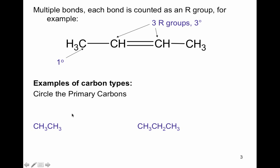Here are some examples of different carbon types. In this exercise, I want you to circle the primary carbons. There might be other carbon types in the molecule, but for this part circle the primary ones. This carbon right here is primary, and this one is also primary. This particular molecule has two primary carbons.